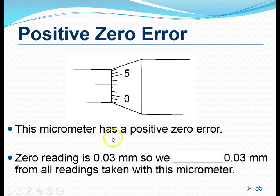However, due to wear and tear, some micrometers can give us some zero errors, and there are two types, similar to that of a vernier caliper.